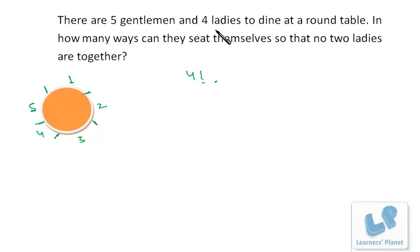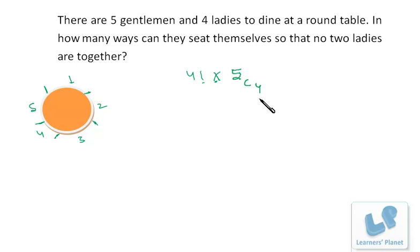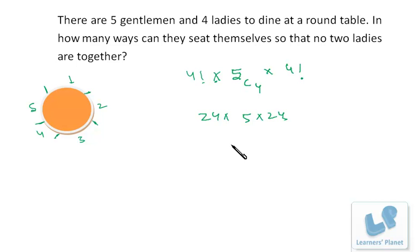We have five places between the gentlemen but only four ladies, so we must first select four places from the five available. Then the four ladies can be arranged in those four places in 4! ways. The total is 4! × 5C4 × 4! = 24 × 5 × 24 = 120 × 24 = 2880.